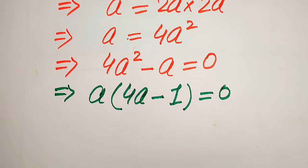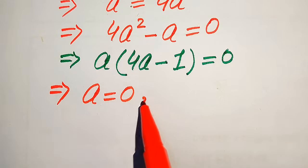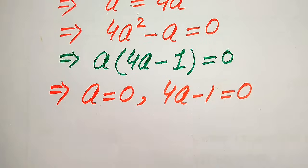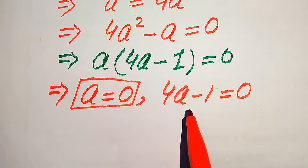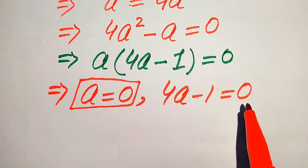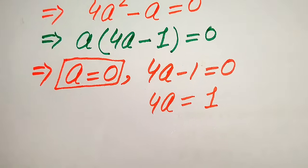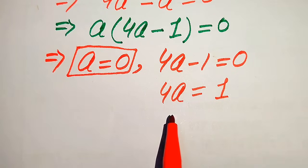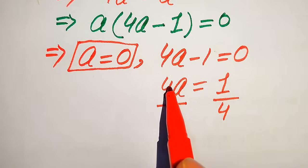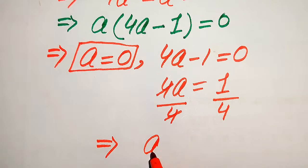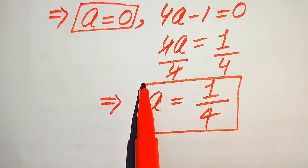Taking out common factor a gives us a(4a minus 1) equals zero. We split into two cases: the first gives a equals zero, and the second case is 4a minus 1 equals zero. Solving the second case: move minus one to the right side to get 4a equals 1, then divide both sides by four to get a equals one-fourth. These are our two roots.